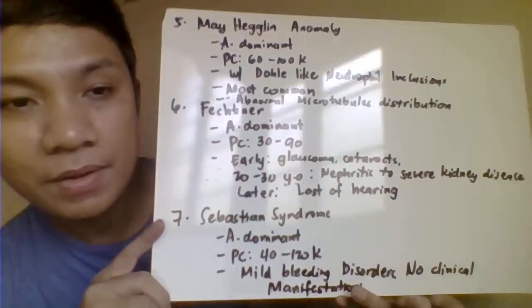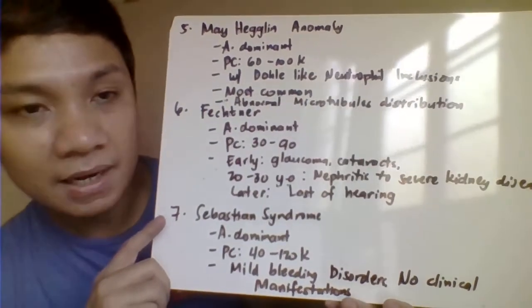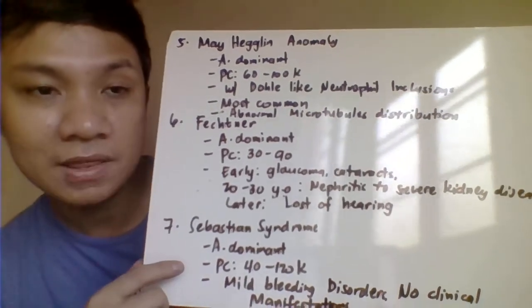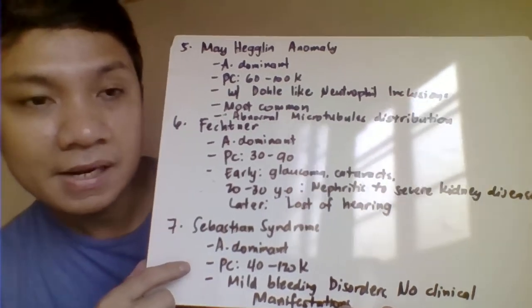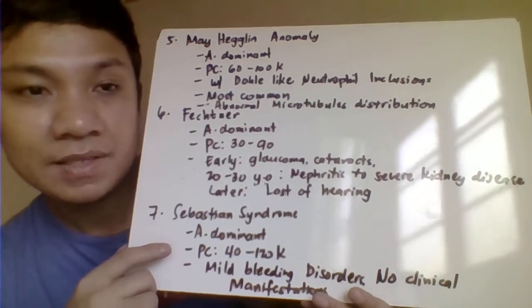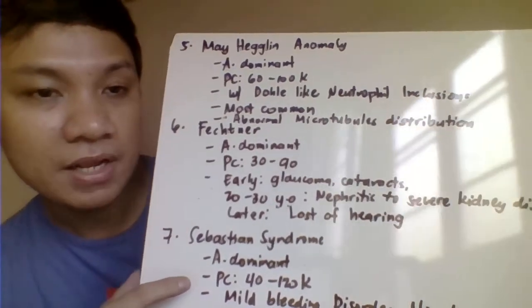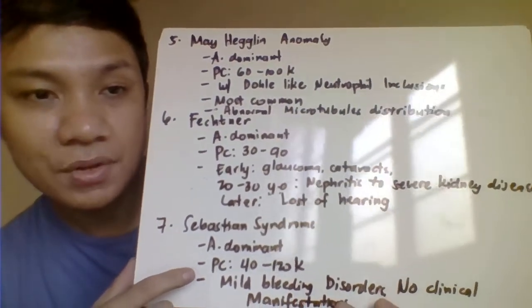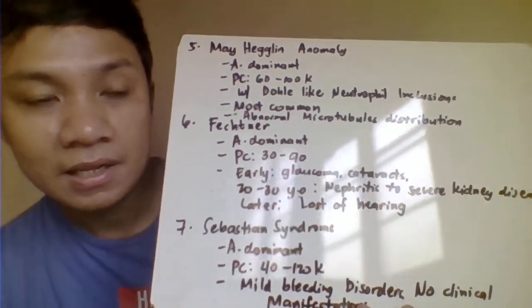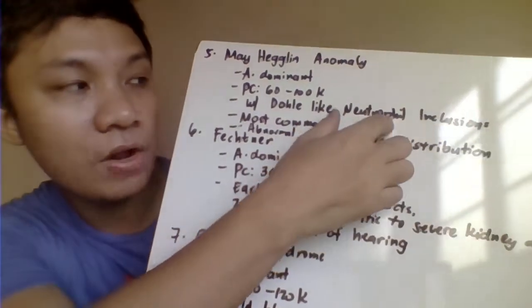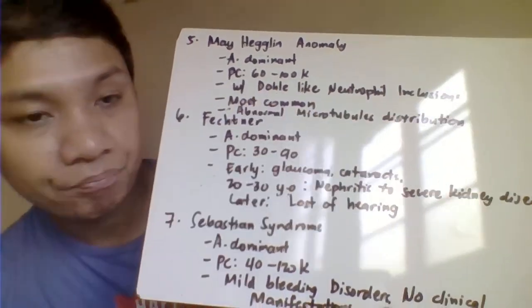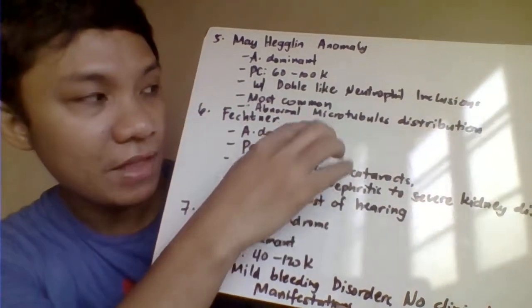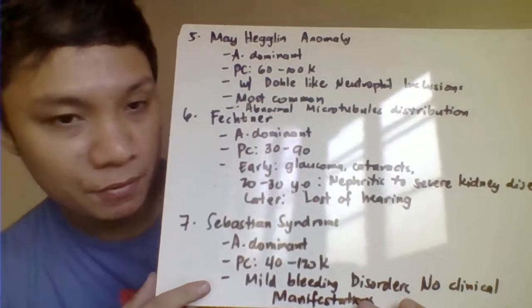Next is the Mayheglen anomaly. It is inherited as autosomal dominant and considered the most common type of inherited giant platelets. Mayheglen has a platelet count of 60 to 100,000 and is characterized by the presence of WBC inclusions in the form of Döhle bodies. It also has very large platelets due to the abnormal distribution of microtubules.